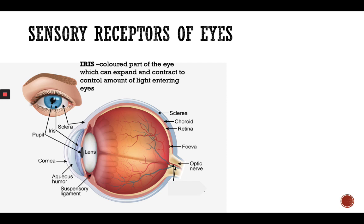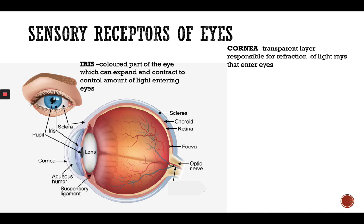The iris can be blue, brown, or grey — in most people in our country it is brown. The cornea is a transparent layer responsible for the refraction of light rays that enter your eye, and it covers not only the front part but also the rear back part of the eye.